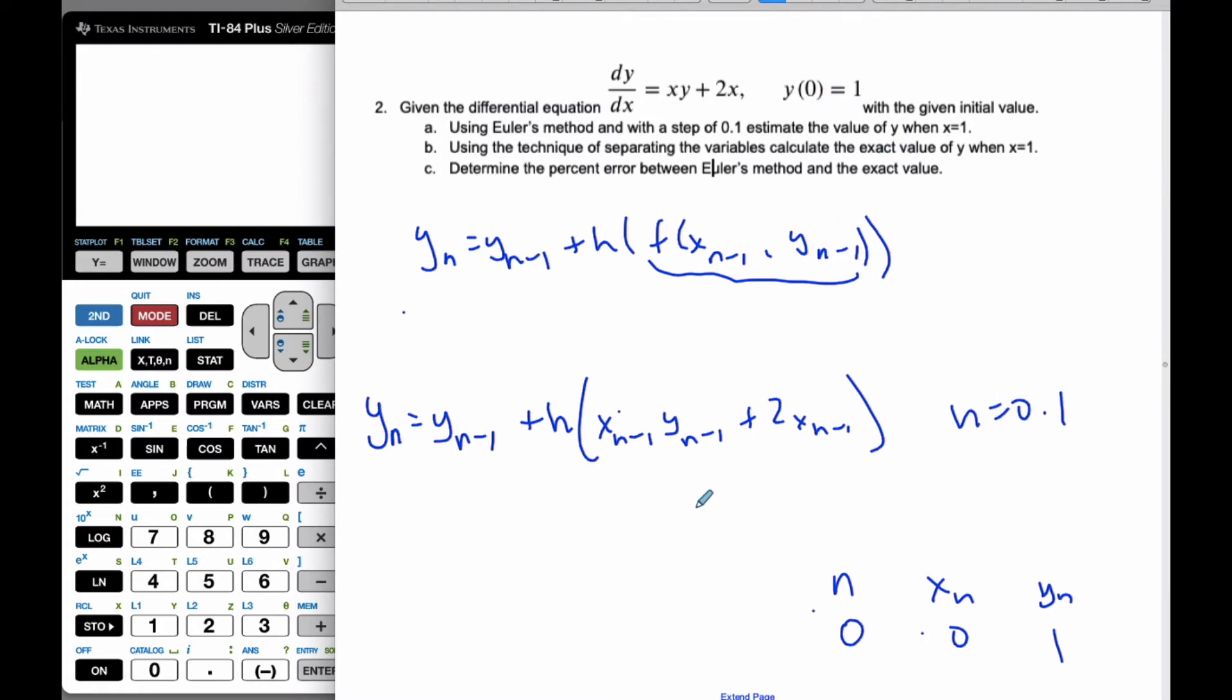And so if I want to show you the very first one, if I want to find y1, well, that's going to be y0 plus h, which I know is 0.1. And this is going to be x0, y0 plus 2x sub 0.